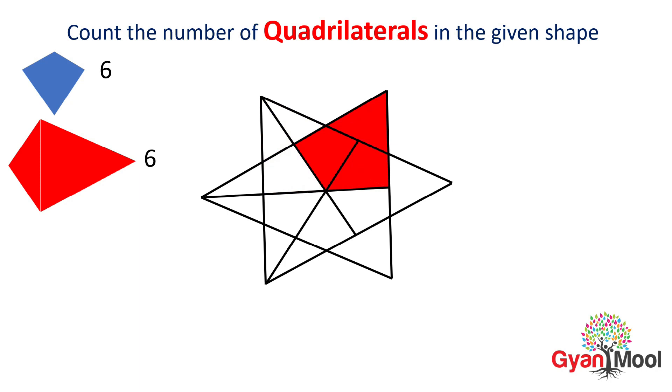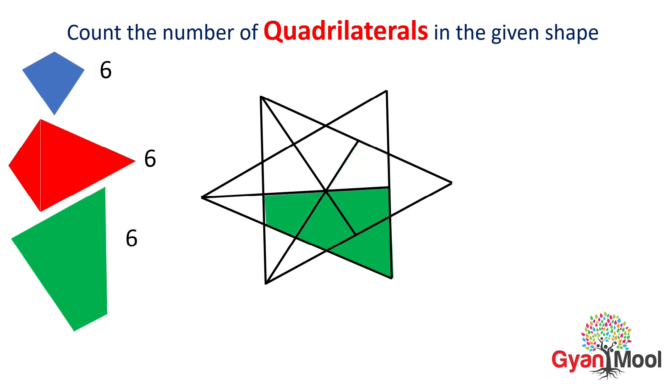After this we will count quadrilaterals like green quadrilaterals. These are 1, 2, 3, 4, 5, 6, 7, 8, 9, 10, 11 and 12. After this we will count the quadrilaterals congruent to yellow quadrilaterals.